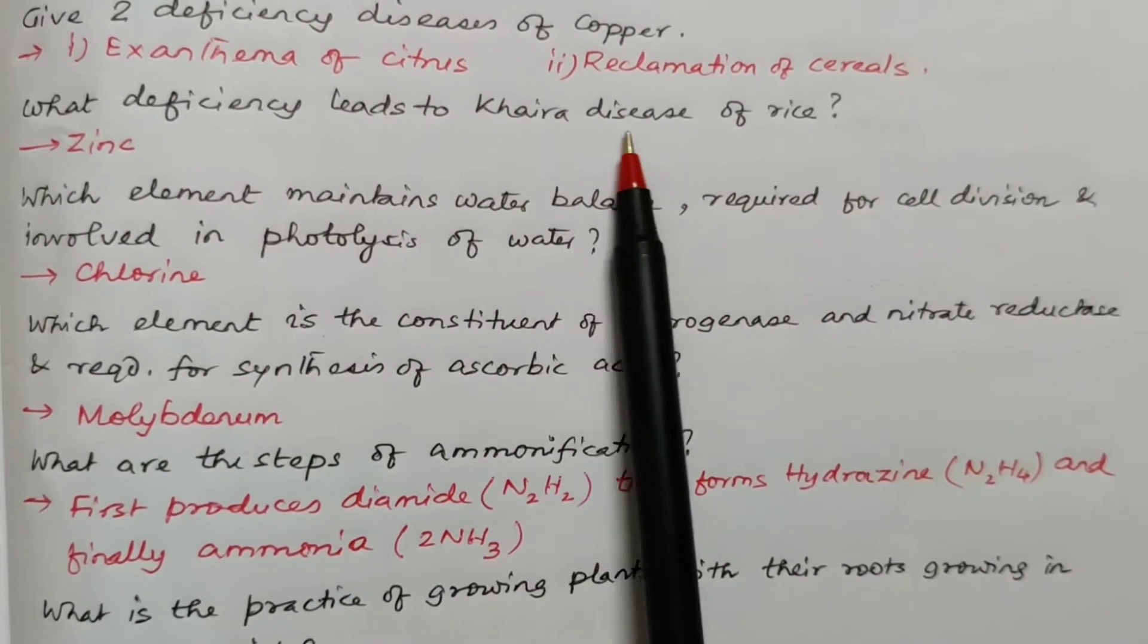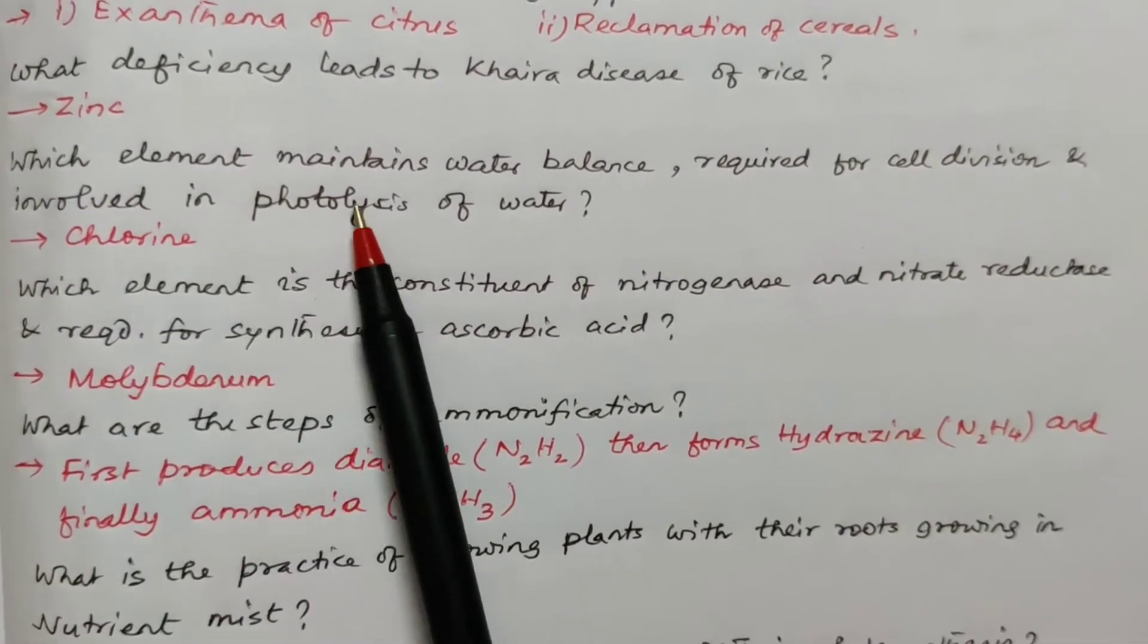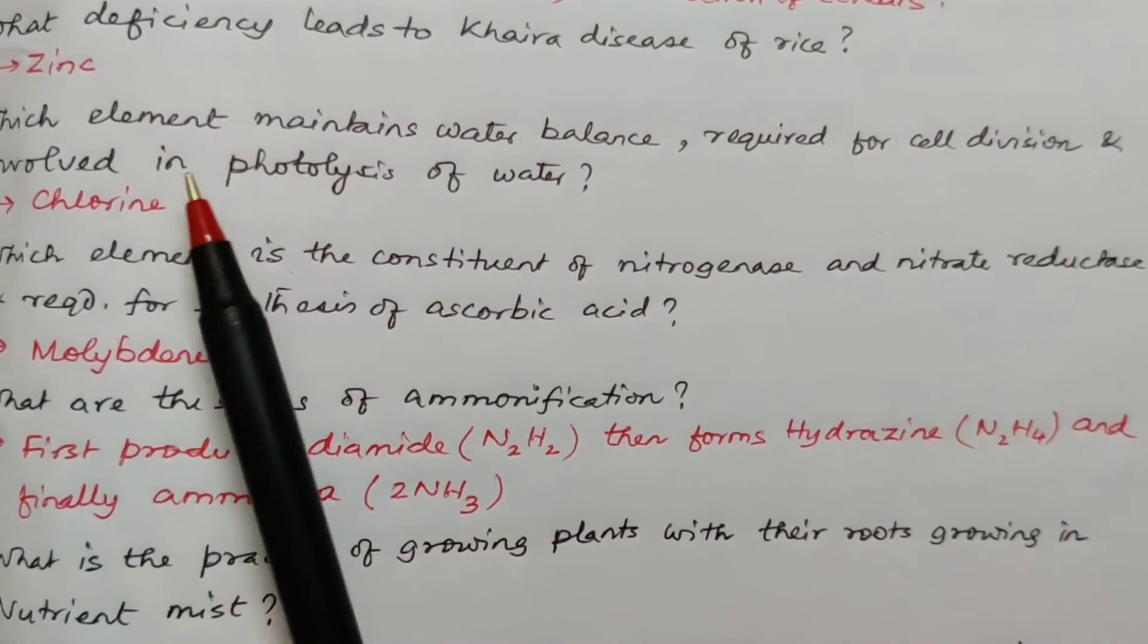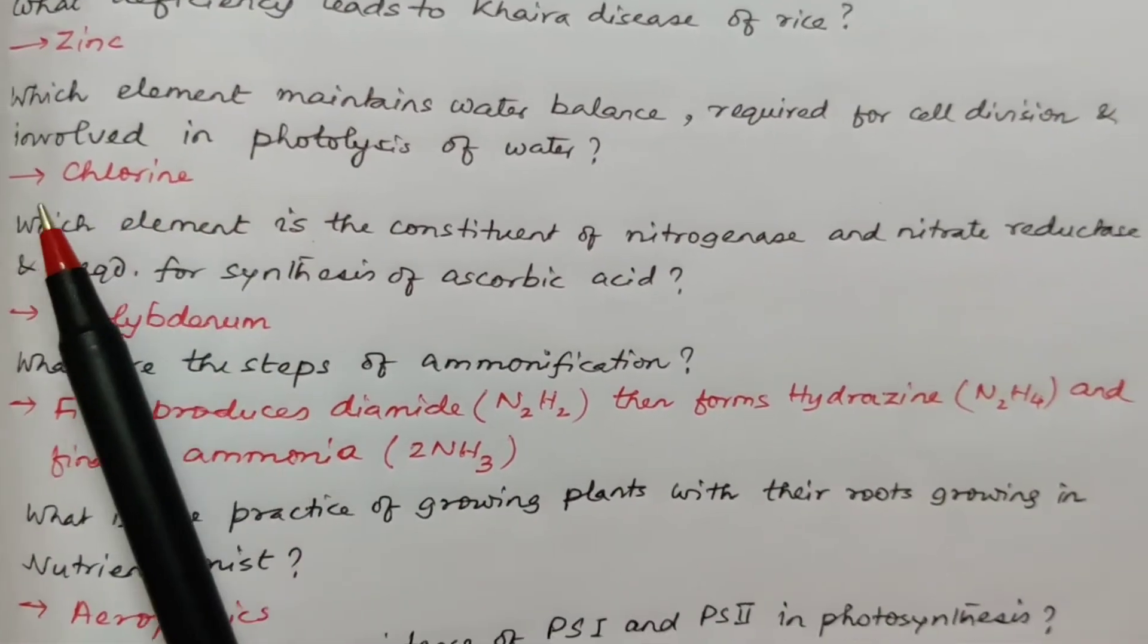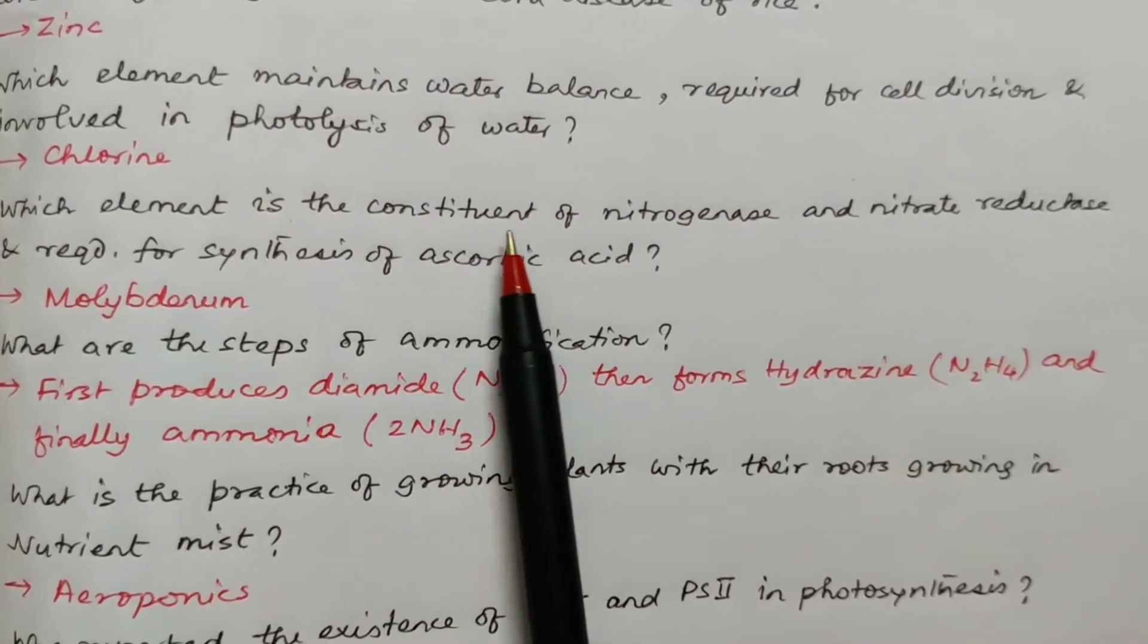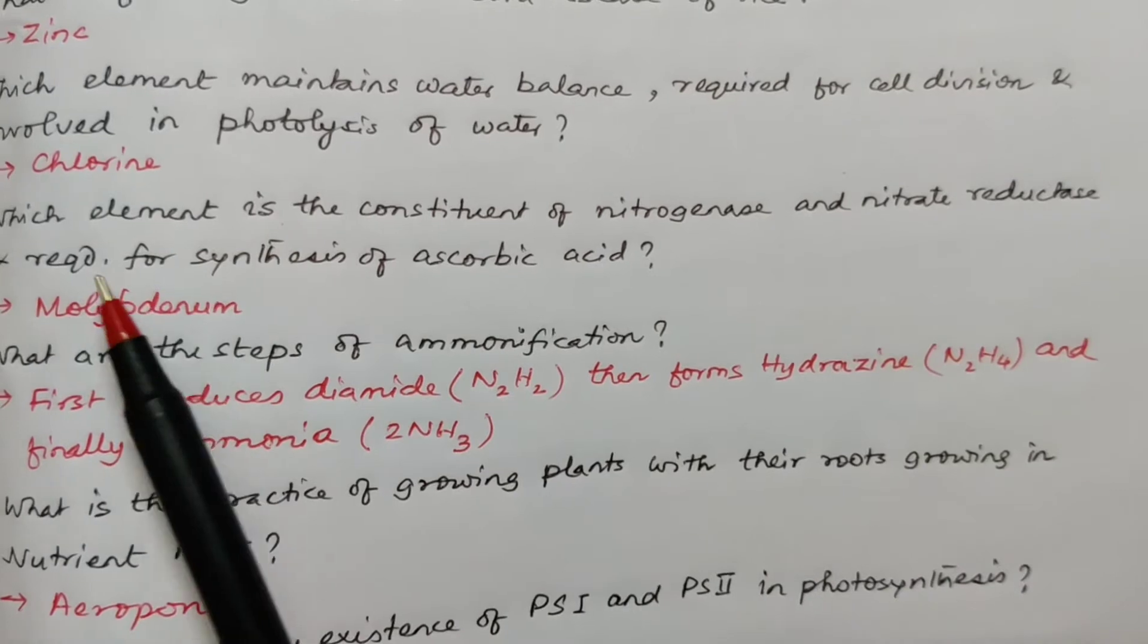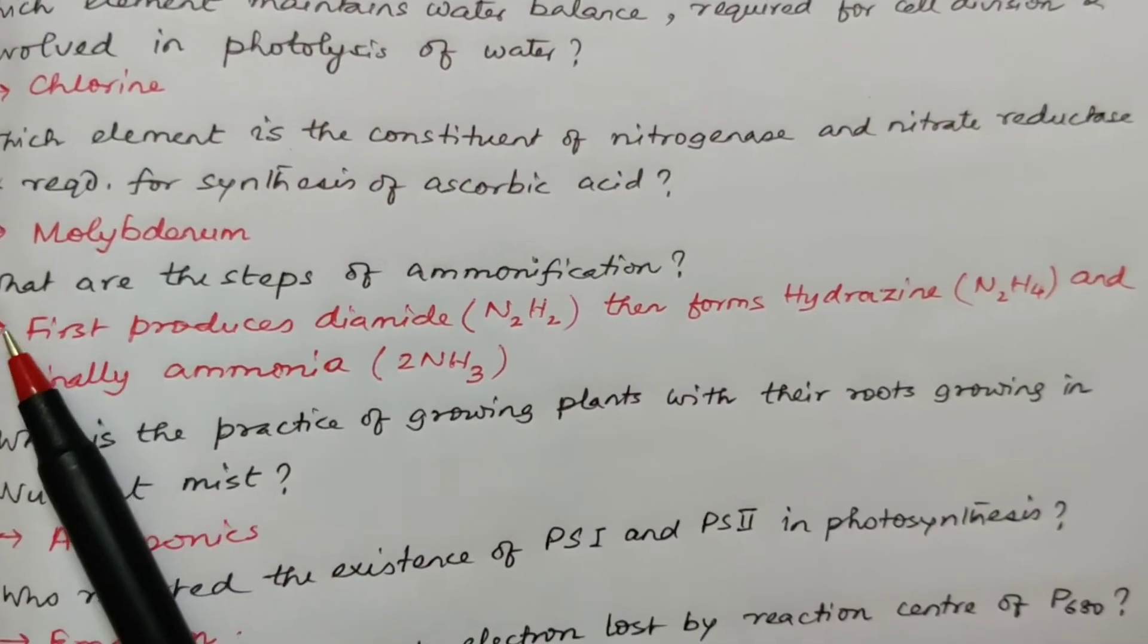What deficiency leads to Chira disease of rice? It's zinc. Which element maintains water balance is required for cell division and involved in photolysis of water? None other than chlorine. Which element is the constituent of nitrogenase enzyme and nitrous reductase enzyme and required for synthesis of ascorbic acid? It's molybdenum.